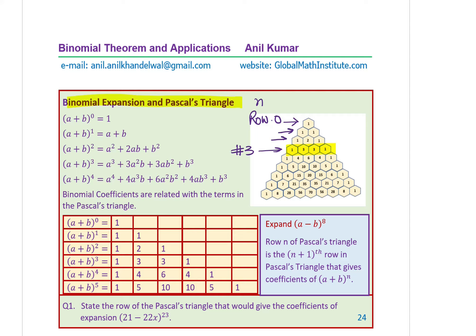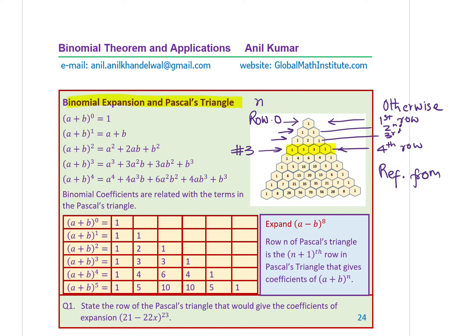However, if you count the rows otherwise, we should say in general we'll call this as our first row, that is the second row, this is the third row, and the row we are discussing now is the fourth row. So it is important to know that when reference from outside is made to Pascal's triangle, we'll call this as the fourth row.